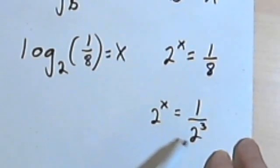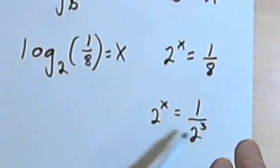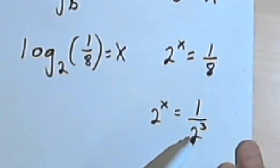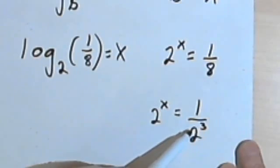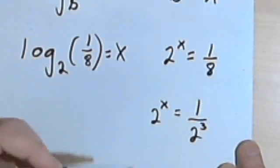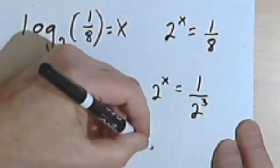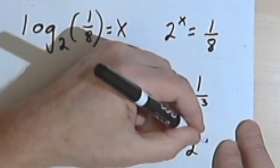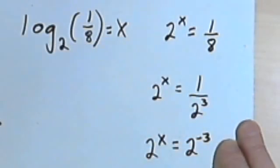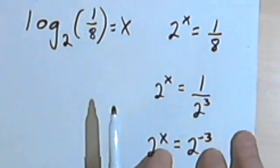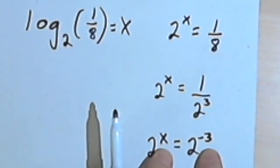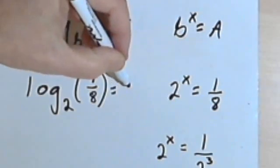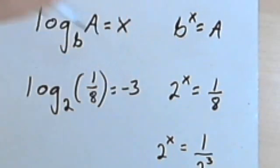And now, I've got a fraction on the right side, but just this 2 to the x on the left side. So let's take this fraction, 1 over 2 to the 3rd, and move that 2 to the 3rd to the numerator. So that's going to be 2 to the x equals 2 to the negative 3. So that means that x must equal negative 3. Now I can go back to my problem and write that the answer is negative 3.